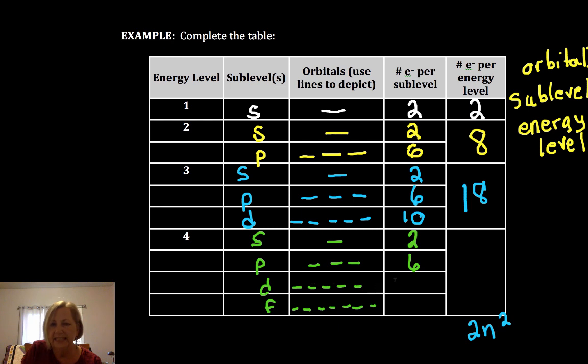2, 4, 6, 8, 10 in the D sublevel, two electrons per orbital. 2, 4, 6, 8, 10, 12, 14 in the F sublevel. And if we added all that up, we'd have 32 electrons in that energy level.